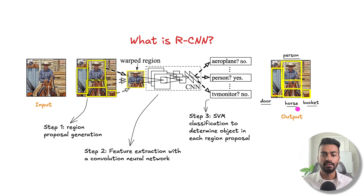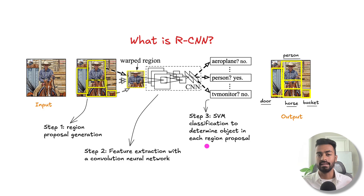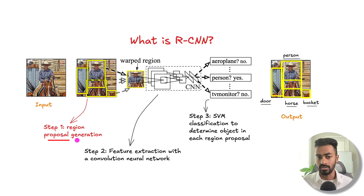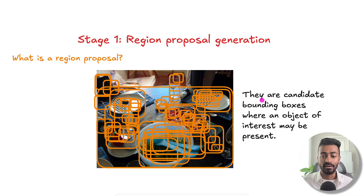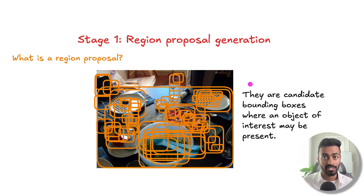There are three distinct phases we'll go through for the rest of this video, adding detail on training and inference. Let's start with stage one: region proposal generation. Given an image, region proposals are the candidate bounding boxes where an object of interest may be present. Each of these orange boxes is a region proposal.